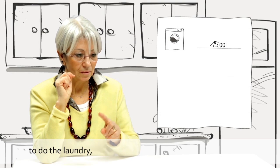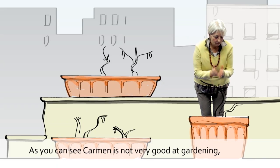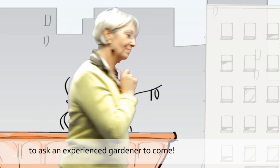She needs time to do the laundry to iron. From 6 to 7 will be cake time. As you can see, Carmen is not very good at gardening. What to do? Oh yes, she can use the time gained to ask an experienced gardener to come.